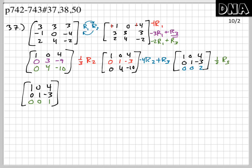It's in echelon form because we have all 1s in echelon order with 0s underneath them. Now, to make it into reduced row echelon form, the entries above the pivots also have to be 0s. The 0 in row 1, column 2 is already fine, but we need to eliminate the −3 in row 2 and the 4 in row 1.